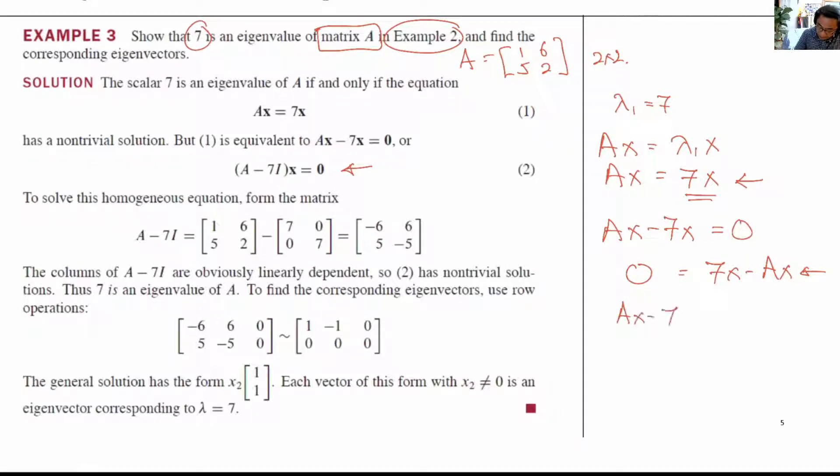Ax minus 7x is equal to the 0 vector. We bring the x out. So we have A minus 7 times the identity matrix, x equals the 0 vector. So convince yourself that this is true.